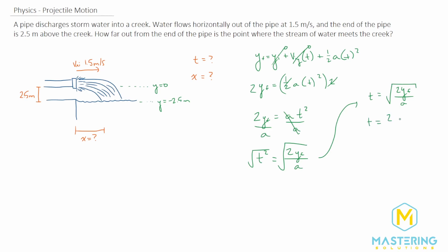When we plug in our values, we have 2 times the y final we set as negative 2.5 meters divided by the acceleration. In the y direction, acceleration is only gravity, so we'll have negative 9.8 meters per second squared because gravity is pointed down in the negative y direction.